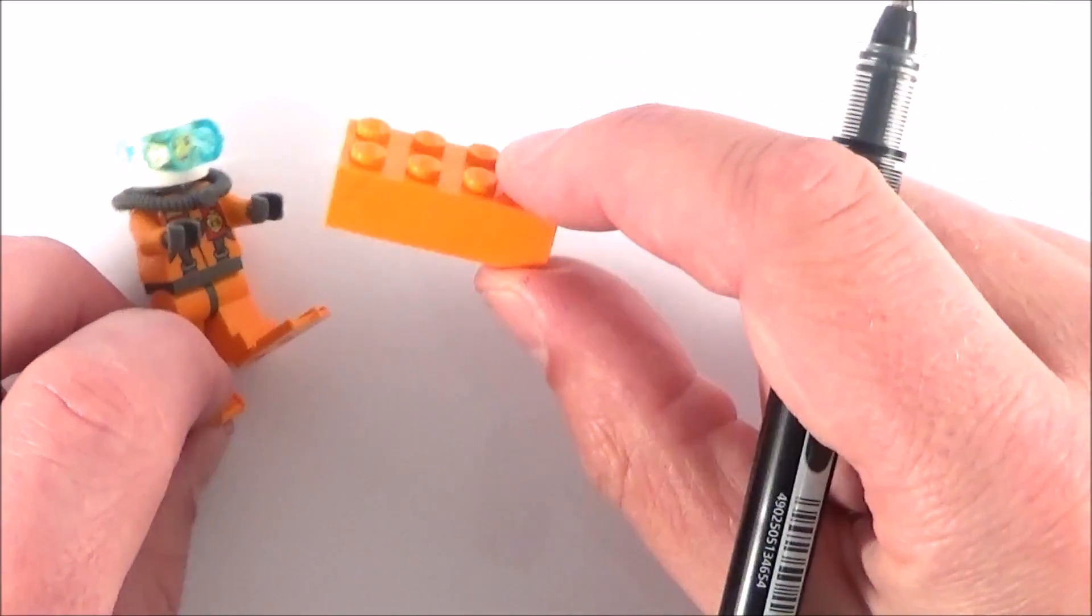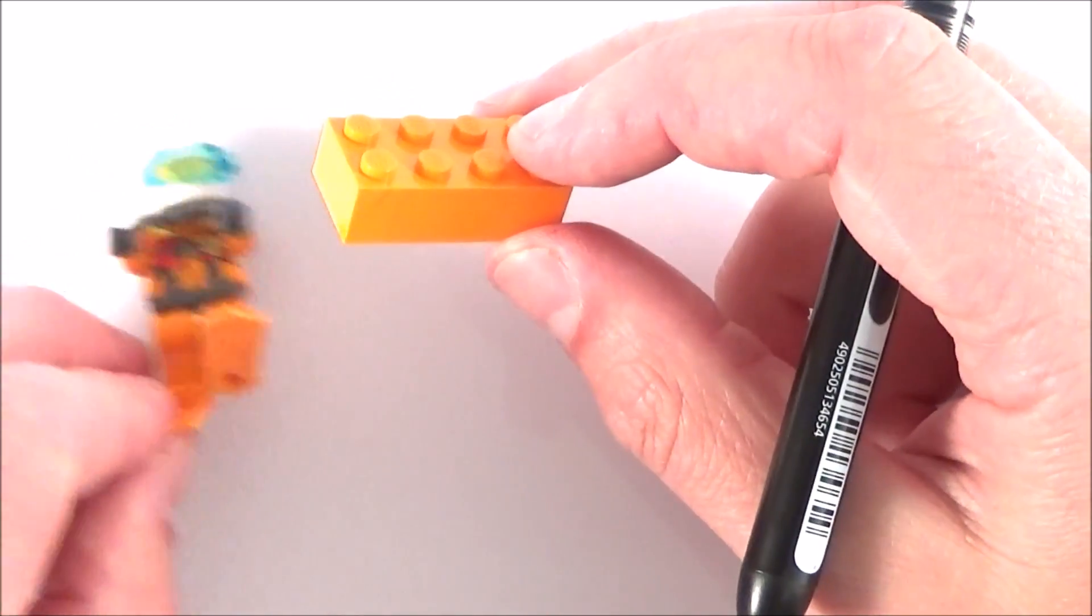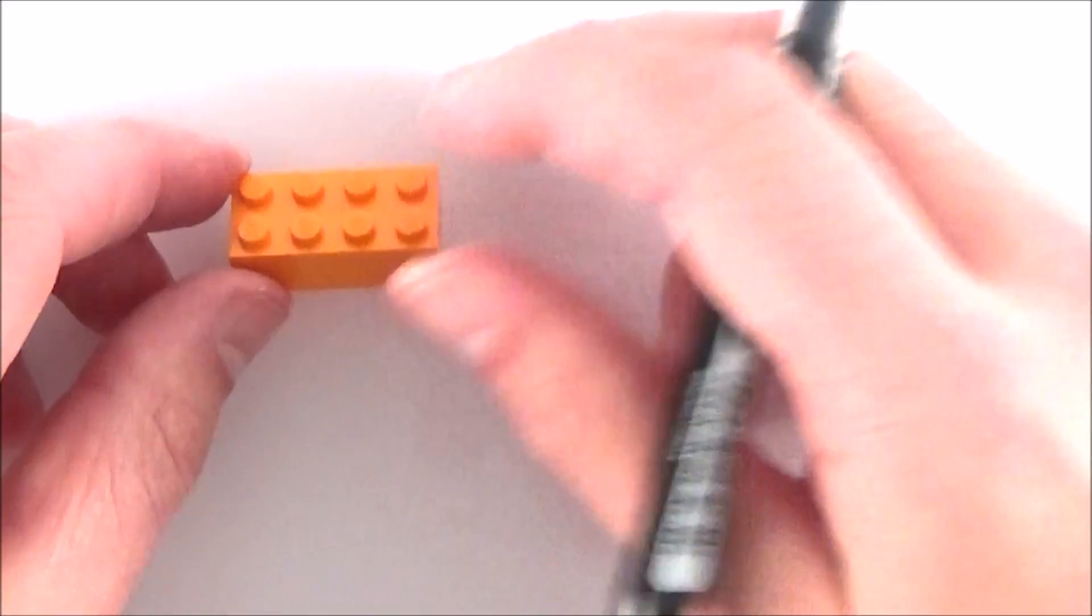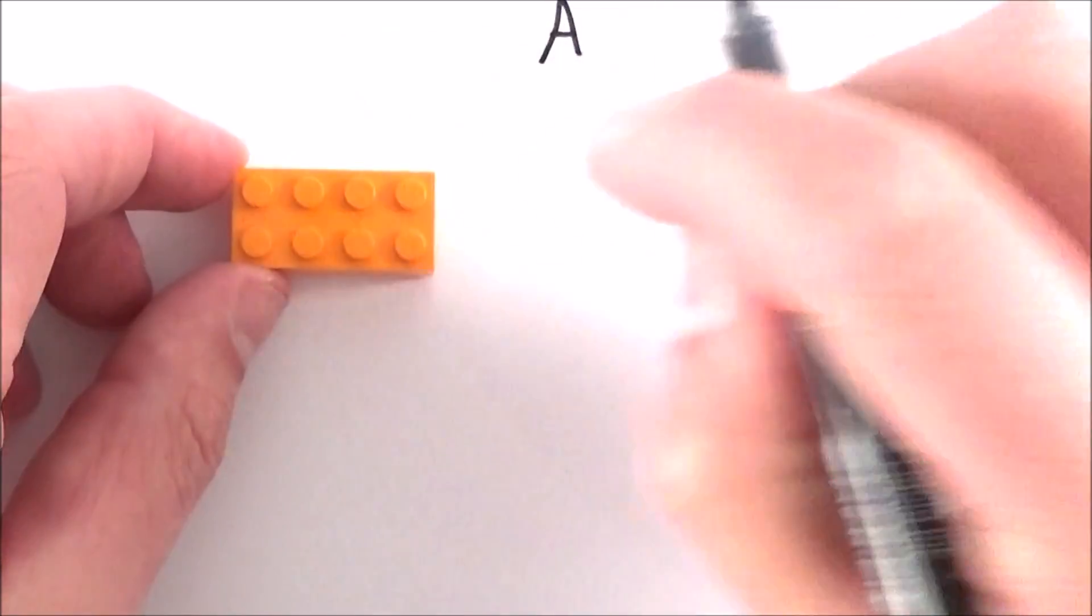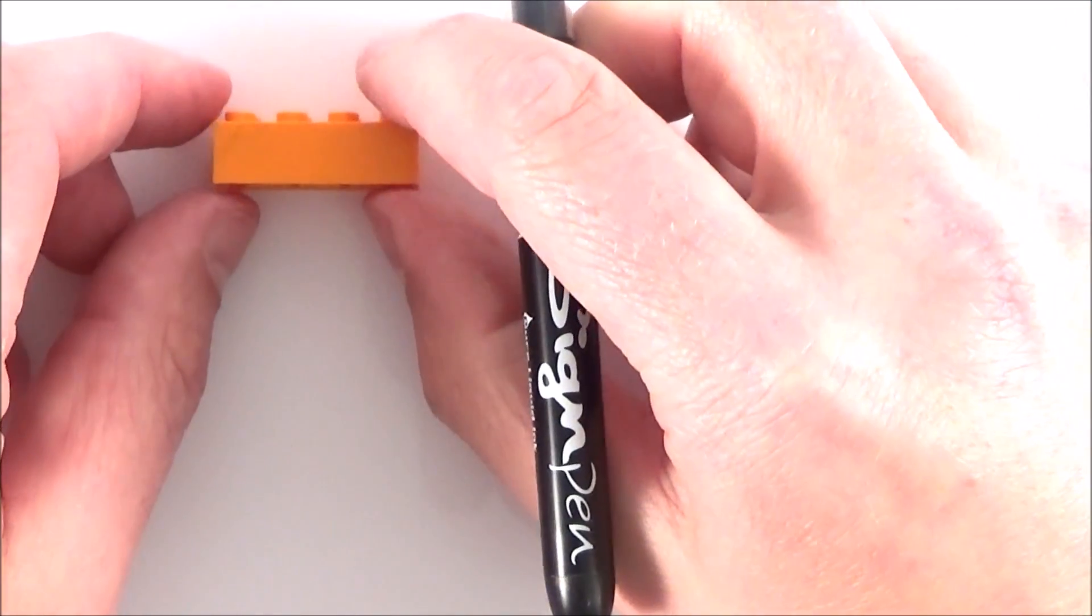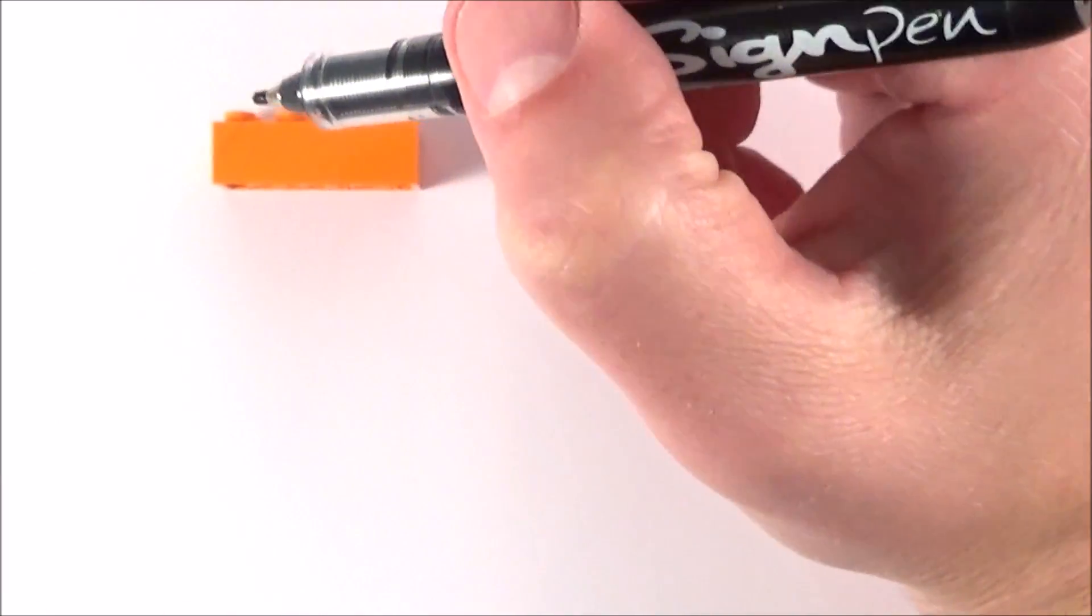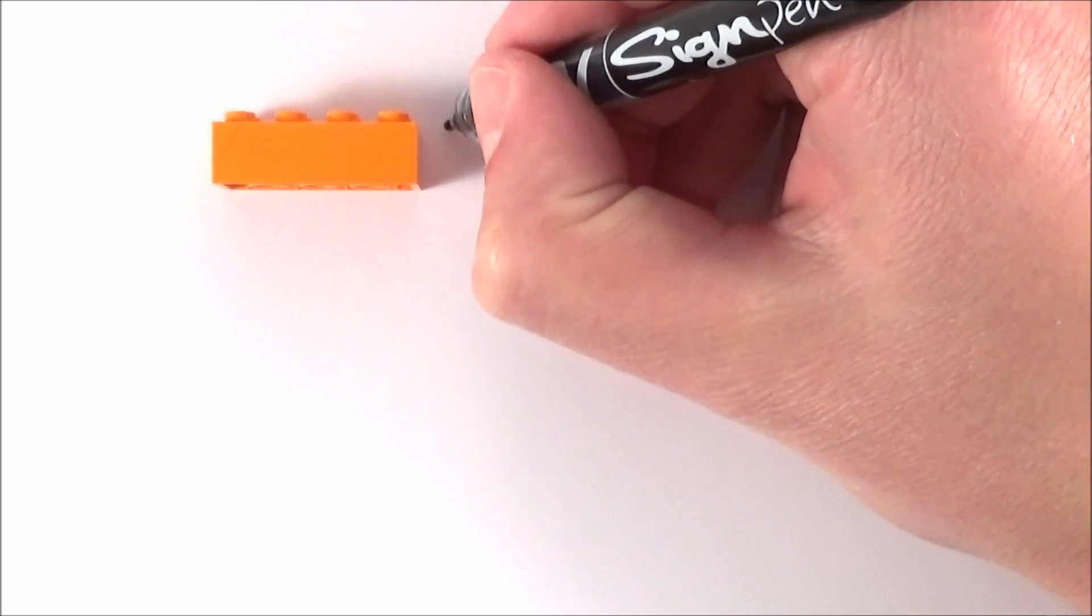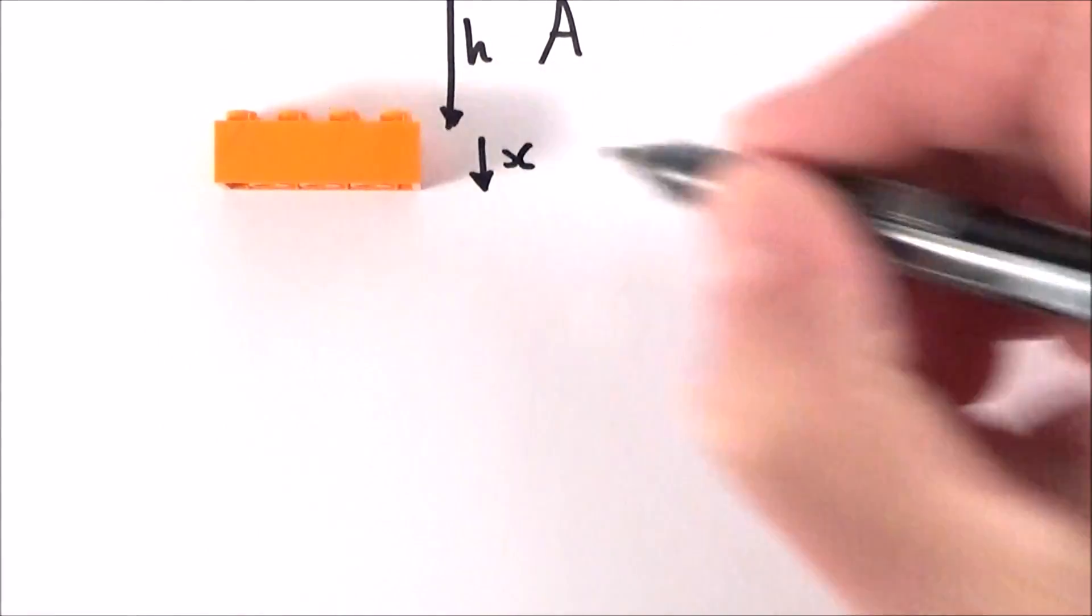Now I'd like to represent this diver by just this straightforward block over here as we consider the forces which are acting on it. This block here has a certain cross-sectional area which I'm going to call A, and I'd like to consider this block at a certain depth which is H. We also have a certain distance that this block goes down which I'm going to call X.